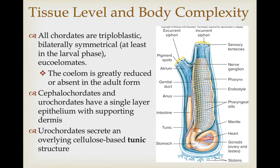All chordates are triploblastic, bilaterally symmetrical at least in the larval phases, and eucoelmate. The coelom is really greatly reduced or absent in the adult form in some, but in the larval phases you can see its development. The cephalochordates and urochordates have a single layer of epithelium with an underlying supporting dermis, and on top of this epidermis the urochordates secrete an overlying cellulose-based tunic structure.